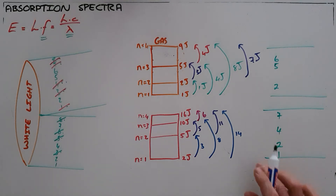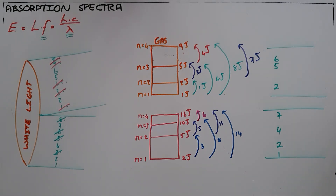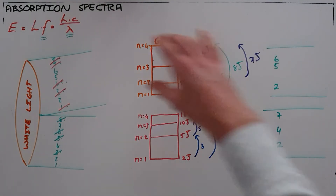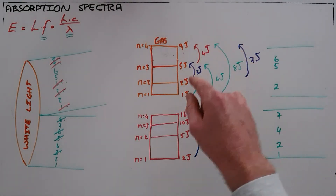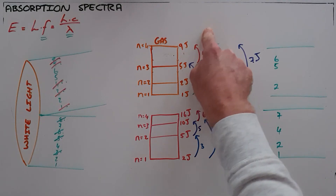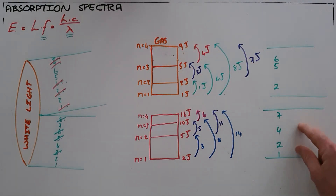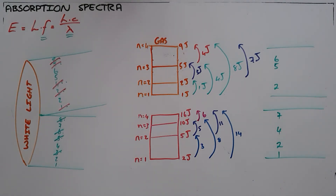This allows us to identify different types of gases based on their absorption spectrum. The spectrum that comes out the other side is called an absorption spectrum because it started with a continuous spectrum and then had certain frequencies or wavelengths absorbed by electrons transitioning into a higher state, giving a unique absorption spectrum for each different element.